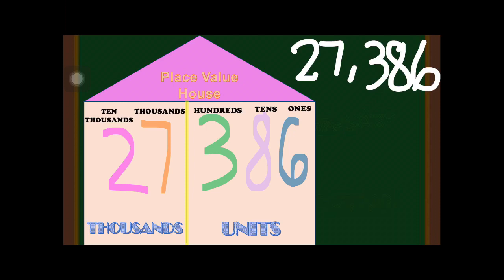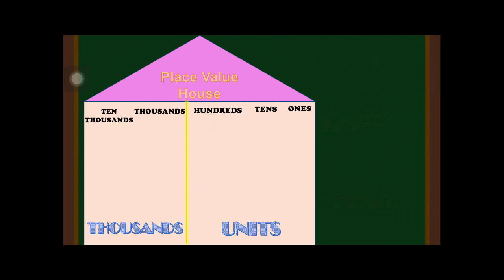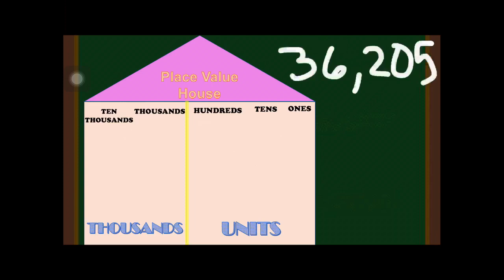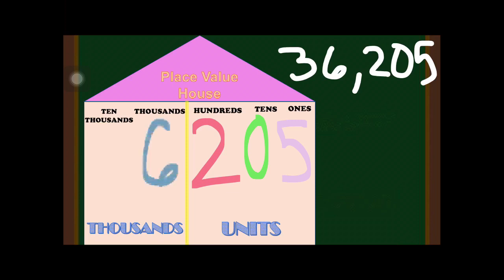For the second example, we have 36,205. Starting from right to left: the first digit from the right is digit 5, which is in the ones place. In the tens place we have digit 0. In the hundreds place we have digit 2. In the thousands place we have digit 6, and in the ten thousands place we have digit 3.